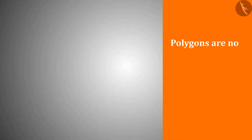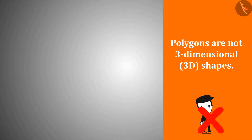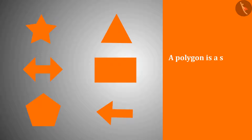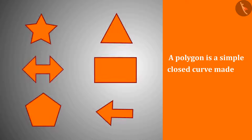Polygons are not three-dimensional or 3D shapes, but 3D shapes can be made using them, like a box. A box is not a polygon, but all the faces of this box are polygons. So a polygon is a simple closed curve made up of only line segments.